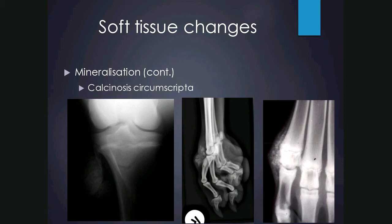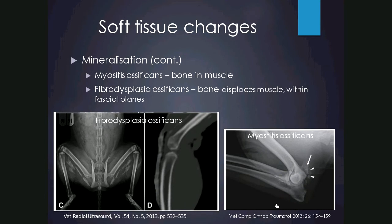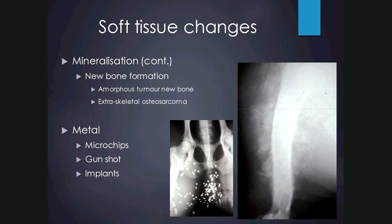Other types of mineralisation include myositis ossificans, where bone develops within the muscle — for example in the triceps. Fibrodysplasia ossificans is when bone forms within the fascial planes but displaces the muscle. In this cat there's extensive ossification within and between the muscles — the semimembranosus and semitendinosus — in the fascial planes as well as cranially over the stifle and tibia on the CT image. Mineralisation can also be due to new bone formation within soft tissue, typically amorphous, which could indicate something like an extraskeletal osteosarcoma.